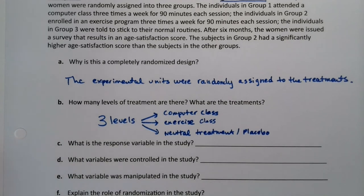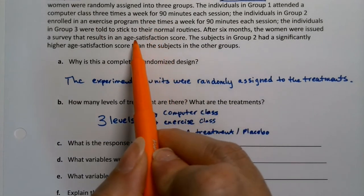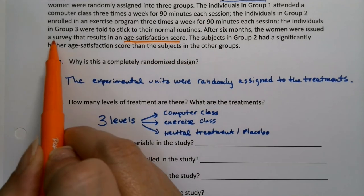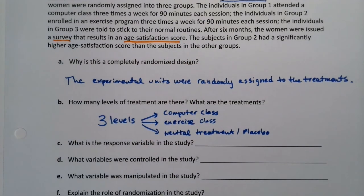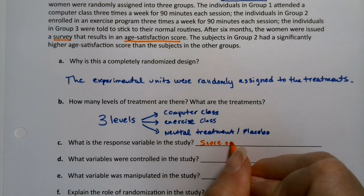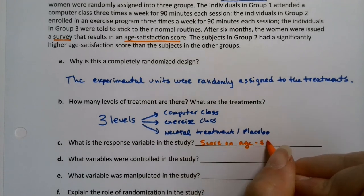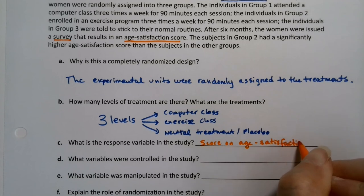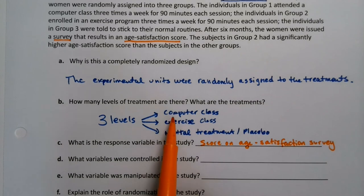Now the response variable is their score on this age satisfaction survey. So how happy are you with your life at this point in your age? So it's the score on the age satisfaction survey. So they're trying to see, hey, are you happier? Are you more satisfied with one of these three treatments?